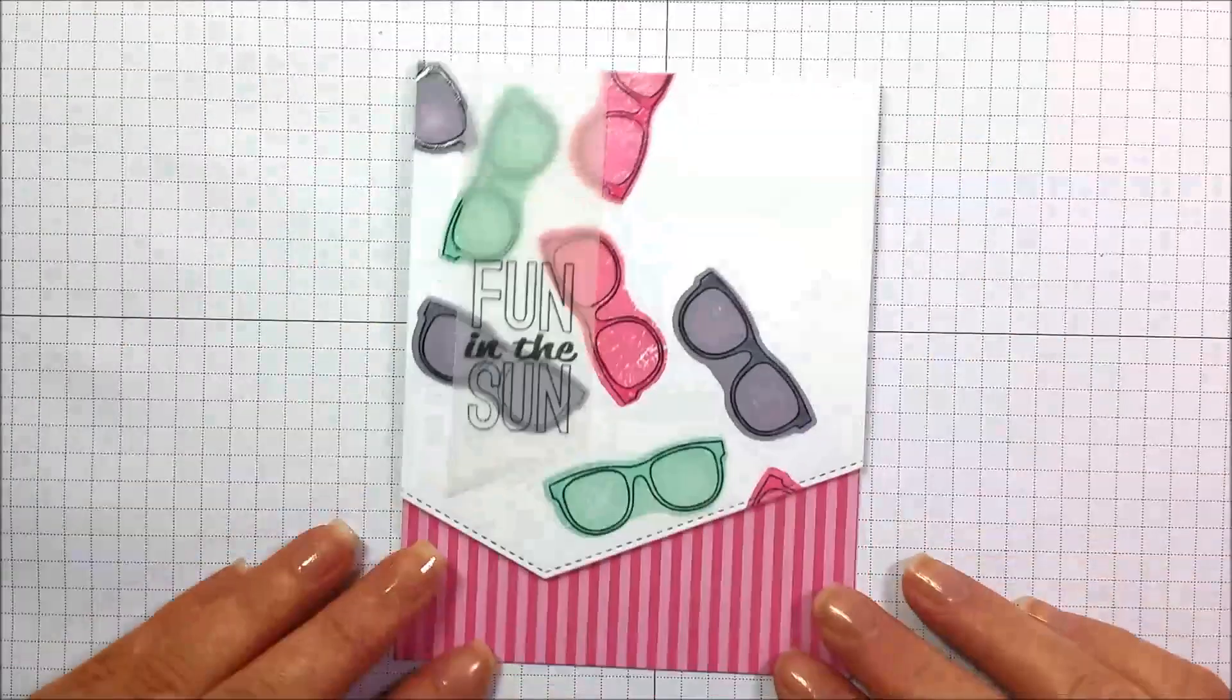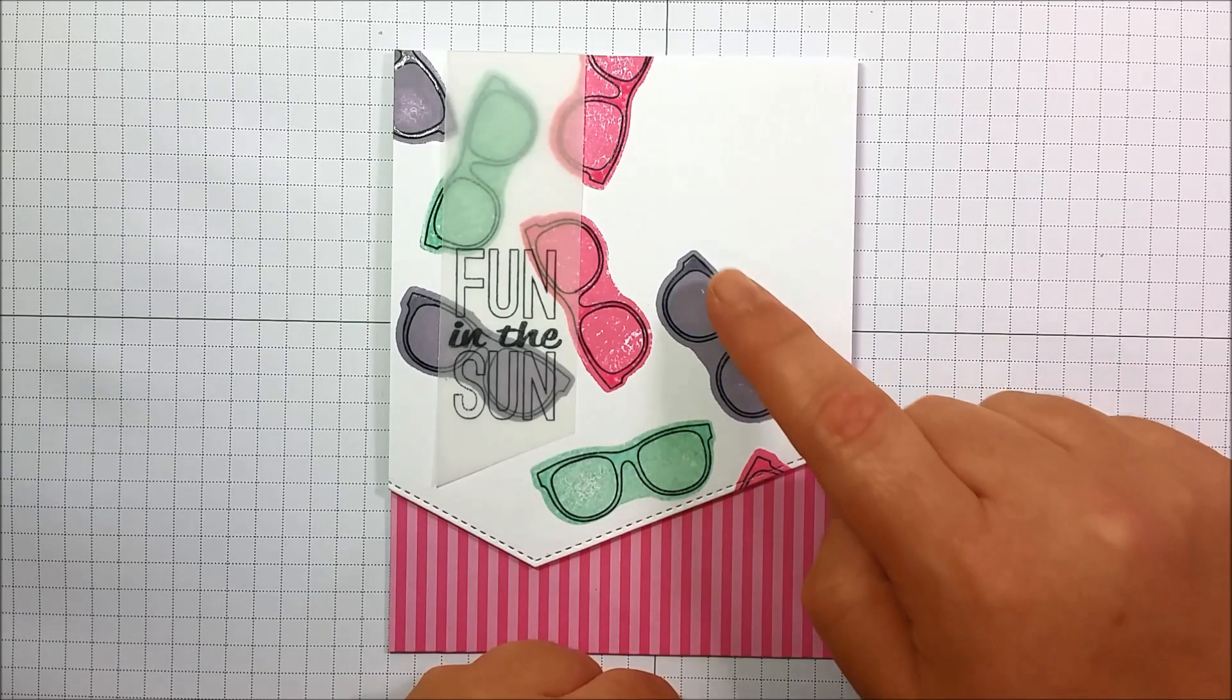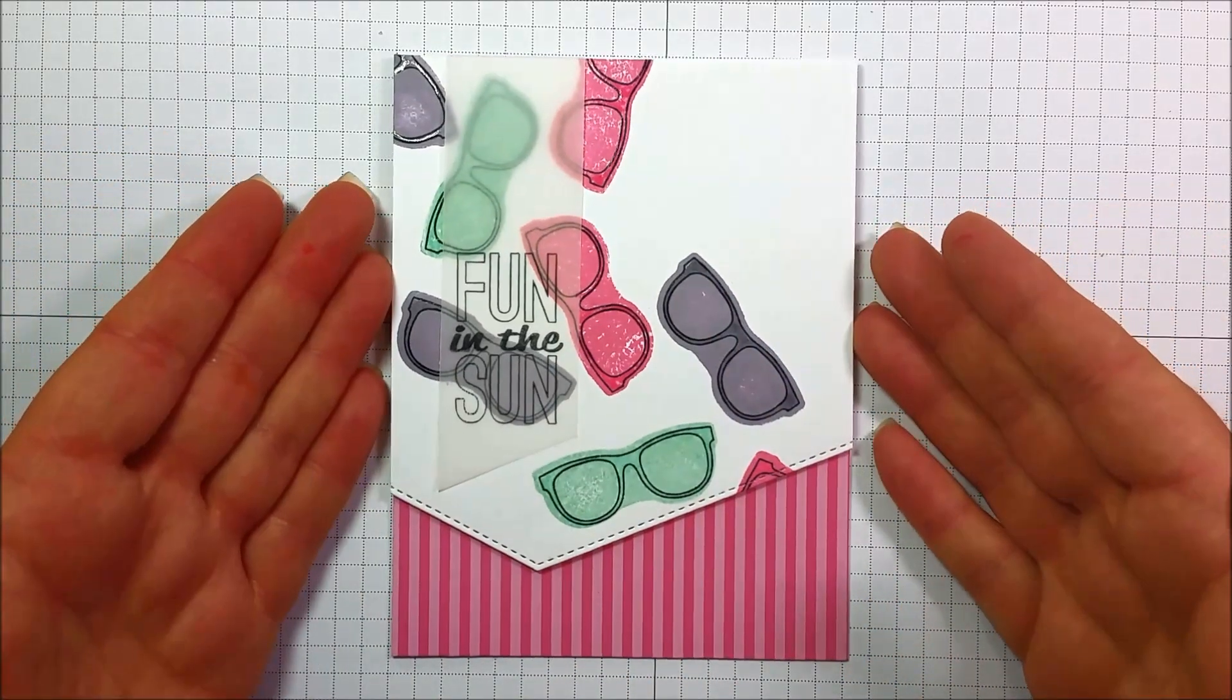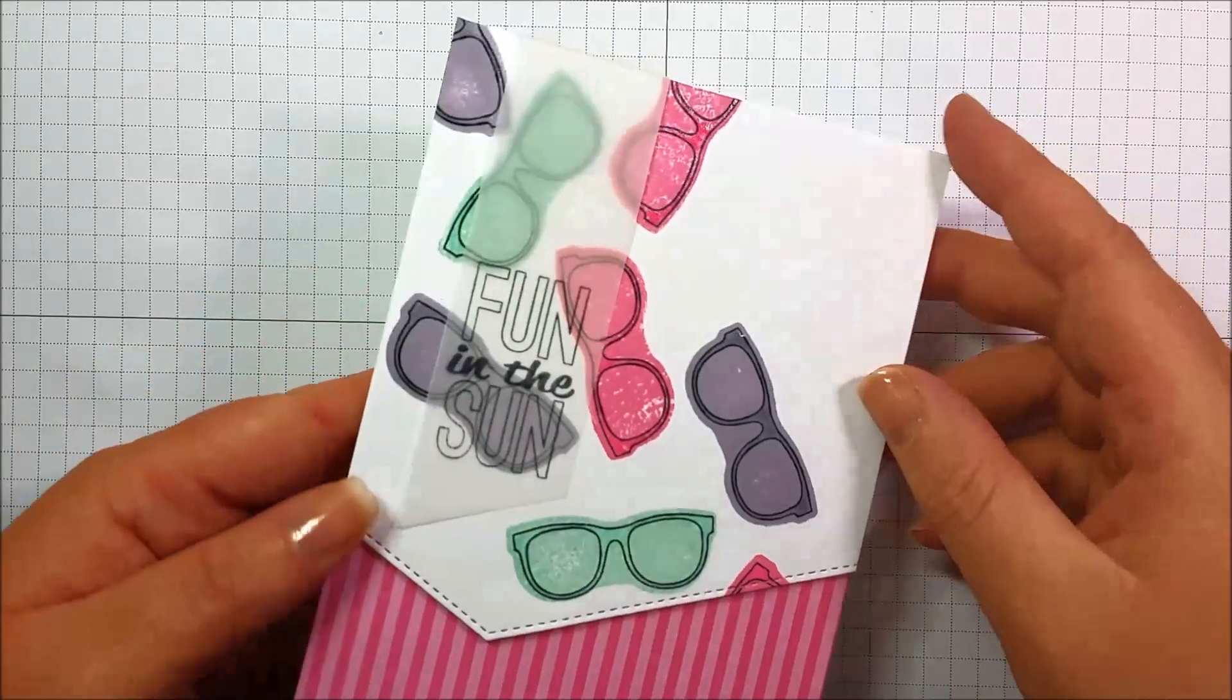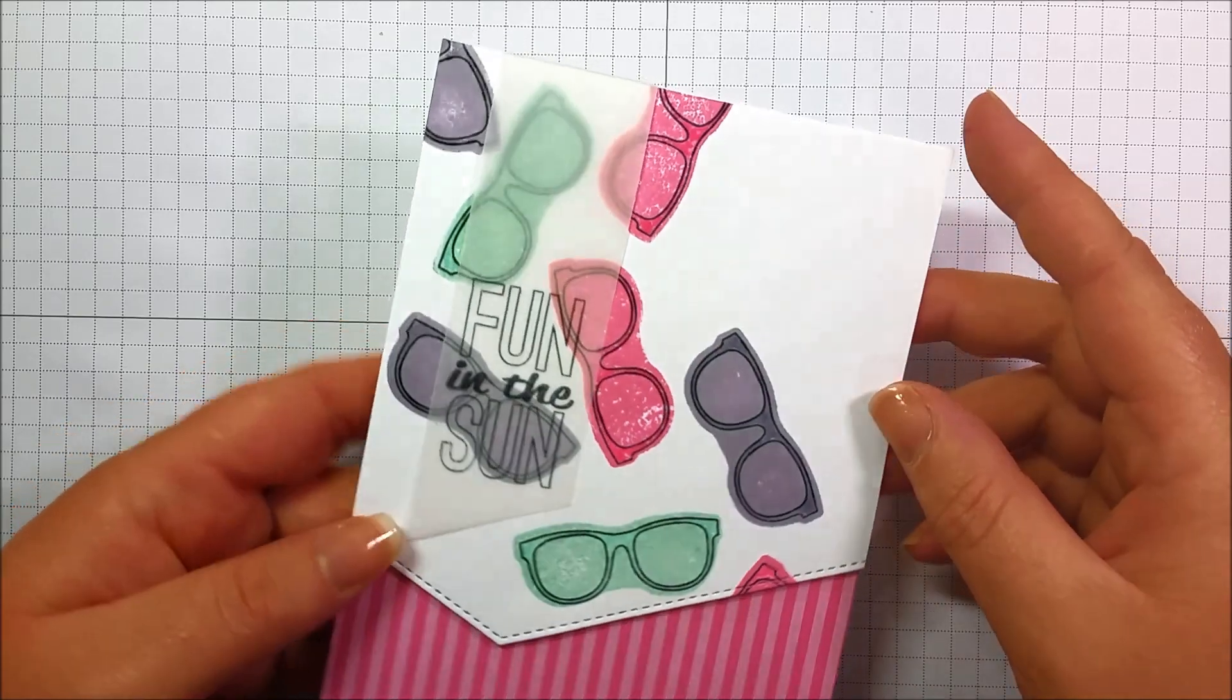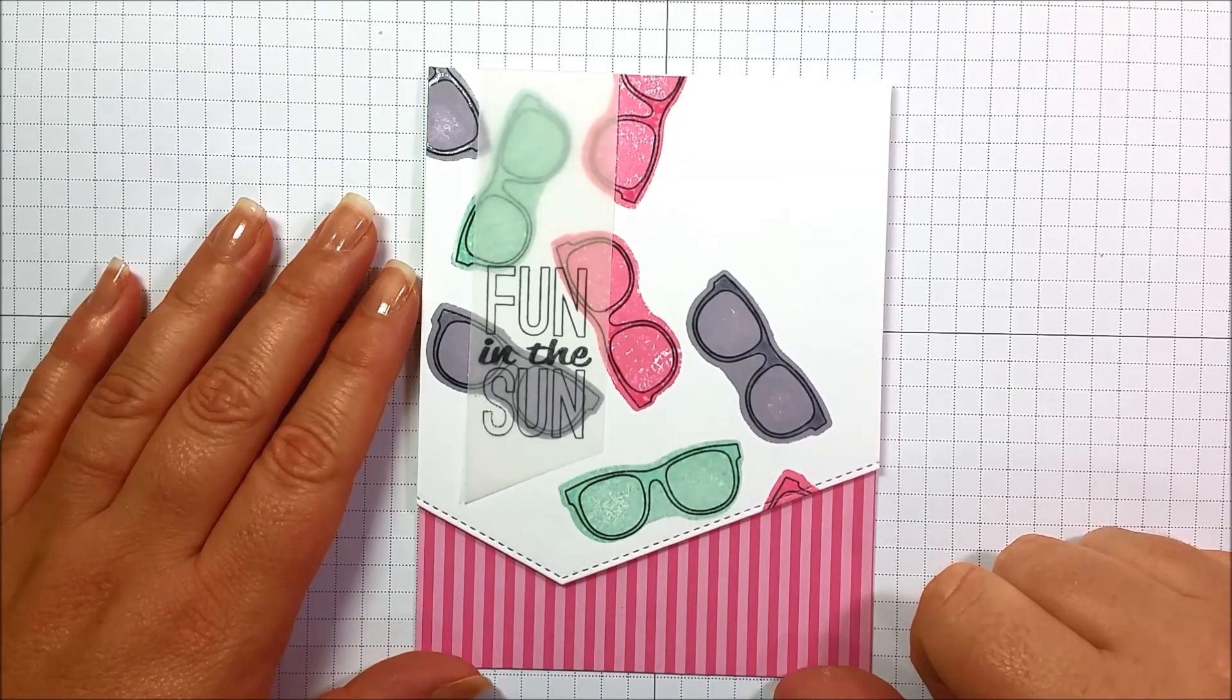And finally our third card where we made our pattern paper where we stamped the reverse side of our stamp and then stamped our actual image. For this one I kept it really simple. I cut an edge, added some cute pattern paper, and then I also added some glaze. I just added a little bit of very simple interest along with a simple greeting.